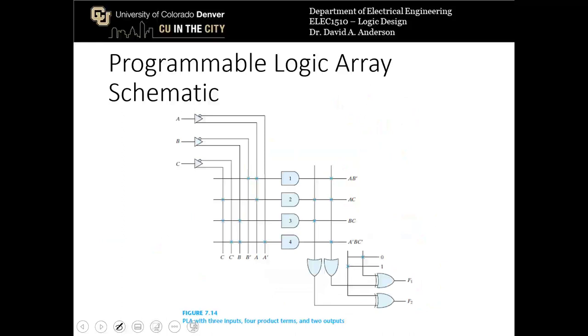So let's look at the entire structure of the programmable logic array again, just to piece it all together. We have our input variables. We have the buffer inverter structure that creates the buffered versions of the input variables and their complements.